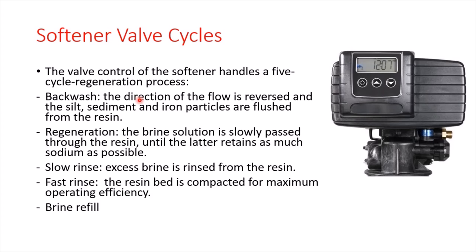At the top of each softener vessel, there is an automatic control valve that controls the five-cycle regeneration process of the resin beads. To regenerate the sodium capacity, we go through five cycles. The first cycle is the backwash, where we clean the resin beads with clean water by reversing the flow direction to remove silt, sediment, and iron particles from the resin. The backwash water must be clean water.